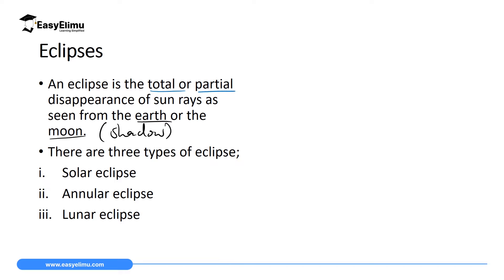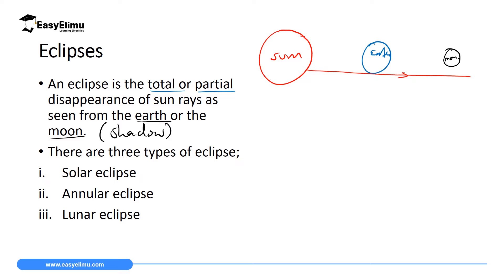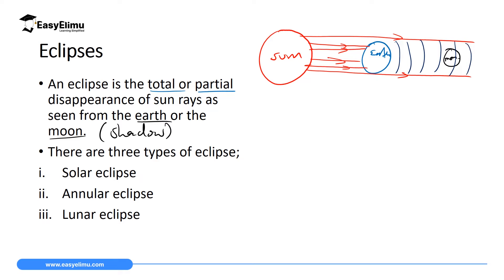We are going to consider two scenarios. In the first, the Earth is in between the moon and the sun. When the sun tries to emit some light to the moon's surface, some of the rays will be blocked by the Earth. The space behind the Earth will be total darkness, which is a shadow — and this total shadow is what we call the umbra.